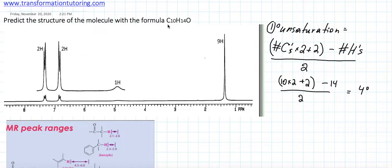Back to our formula, we have 10 carbons, 10 times 2 plus 2 minus 14 hydrogens over 2. And that gives us 4 degrees of unsaturation. If we have 4 degrees of unsaturation, there is a very high chance that we have a benzene ring.